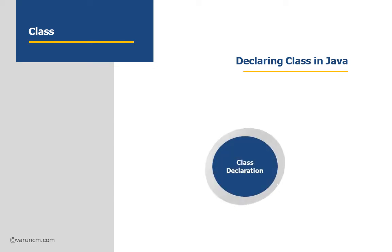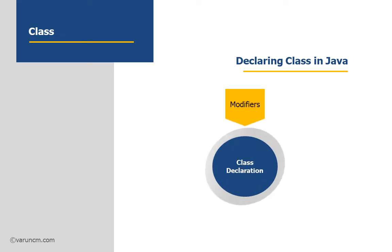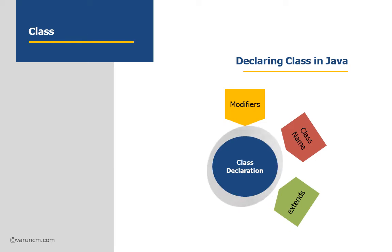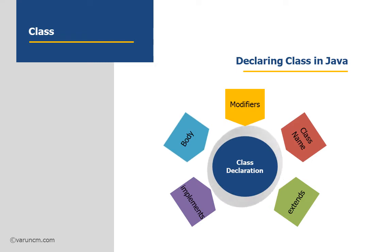While declaring the class, there are some components that need to be present. The components are: first, the modifier; then the class name; then extends, which is a keyword; implements, which is also a keyword; and the body of the class.